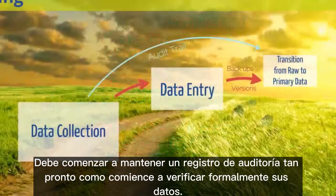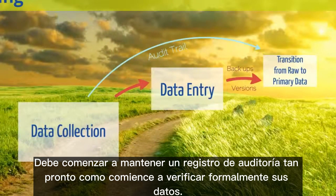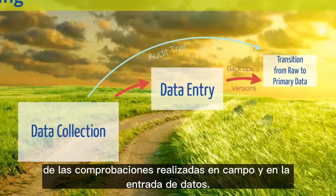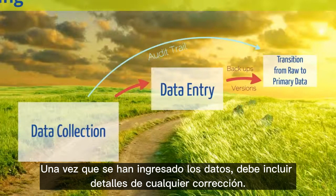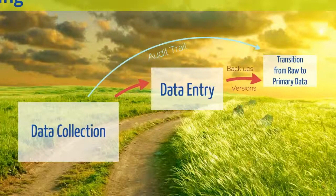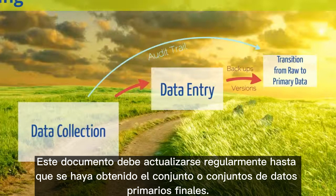You should start keeping an audit trail as soon as you formally start checking your data. This can be in the form of a document containing details of the checks that took place in the field and in data entry. Once the data has been entered, it should include details of any corrections or changes to the data and how any outliers were dealt with. This document should be regularly updated until the final primary dataset or datasets have been finalised.